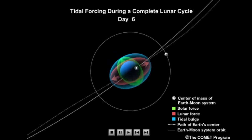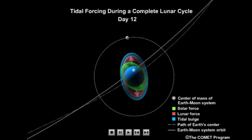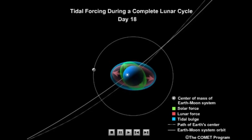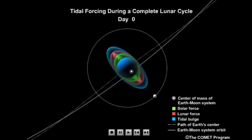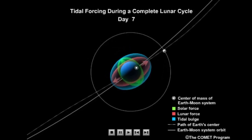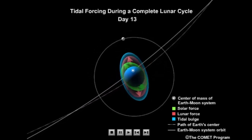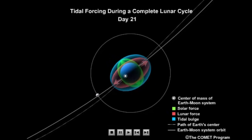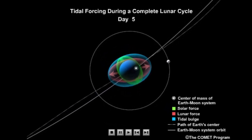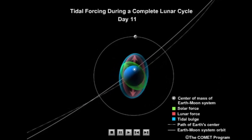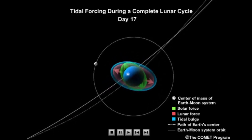Now we can combine the lunar bulge model of tides with the concepts of constructive and destructive wave interference as discussed in the Waves video tutorials to explain the periodicity of spring and neap tides. The lunar and solar bulges are continually interfering with each other. As the Moon moves around the Earth every 29 days, it will carry the lunar bulges into phase and out of phase with the solar bulges.